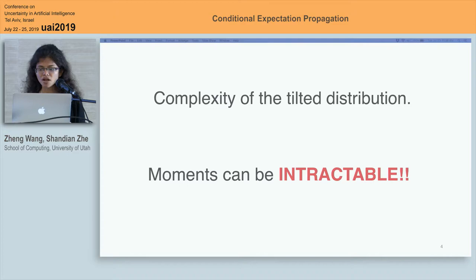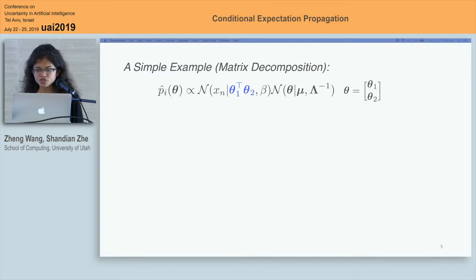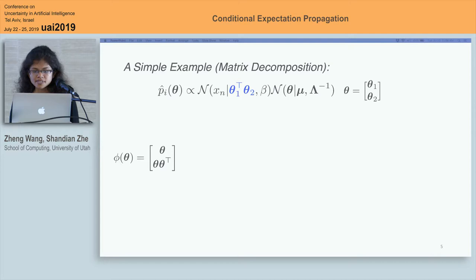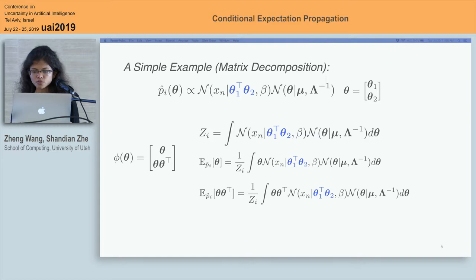Unfortunately, the moments can sometimes be intractable because of the complicated tilde distribution. Here is a simple example of matrix decomposition. The first Gaussian factor is the typical likelihood function for matrix decomposition. The second Gaussian is the calibrating distribution. Theta 1 and theta 2 are latent factors and Xn is the element value. Given sufficient statistics, it is because of the product form of the two random variables that the computation of the normalization constant and the moment is intractable.